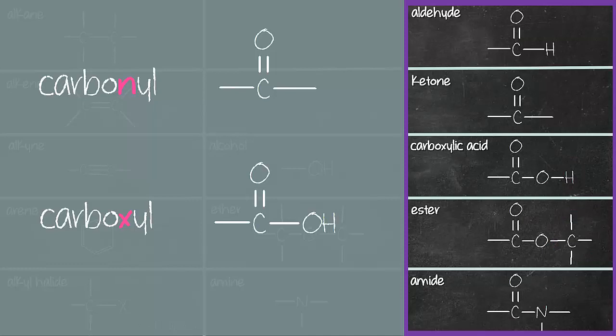And last in that group that also has C double bond O is amide. The difference between amide and the rest is that aside from that C double bond O, next to it is attached to a nitrogen which has three bonds. So that's the difference between all of these carbonyl groups.